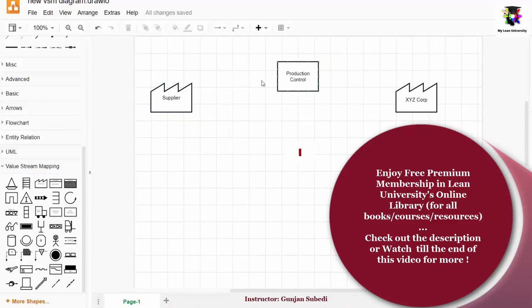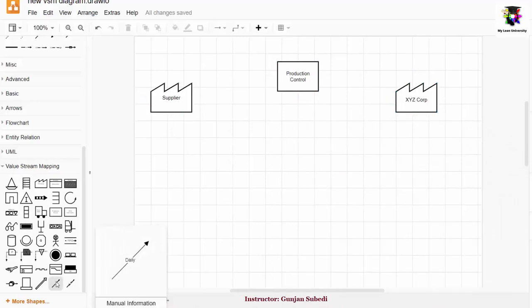Now we have to join these symbols over here. You have to decide how the information is passed between the customers, production control and supplier. To do that, we can select the straight arrow for verbal communication and zig-zag arrow for internet-based communication. So suppose I click this arrow. On doing so, I will also be getting the frequency of order or frequency of communication. We have monthly communication here.